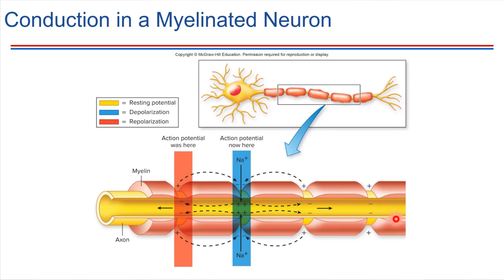Let's consider this axon shown in yellow right here. We can see the myelin sheath is wrapped around it. Let's pick a spot right here and suppose that an action potential has just taken place at this location. There was some stimulus that caused a few initial ion channels to open, which caused ions to rush across, which caused voltage-gated ion channels to open. So an action potential took place, and that depolarization would cause neighboring voltage-gated ion channels to open. However, there's this myelin sheath wrapped around.